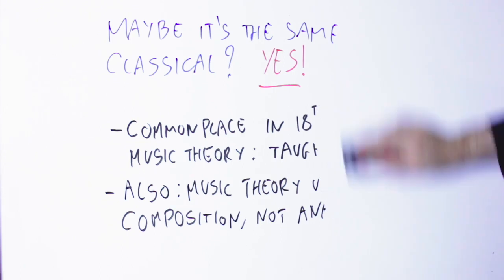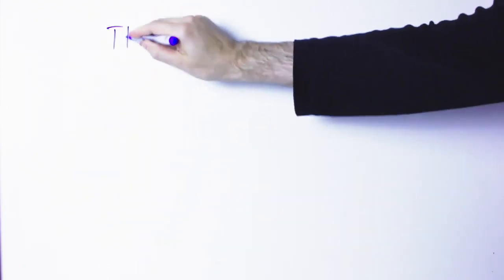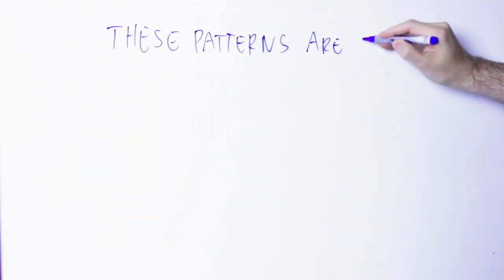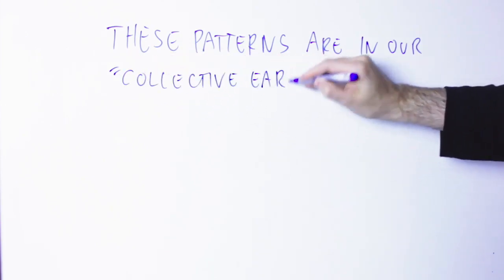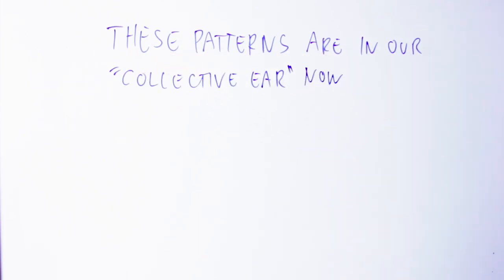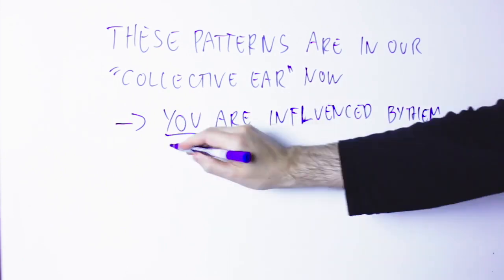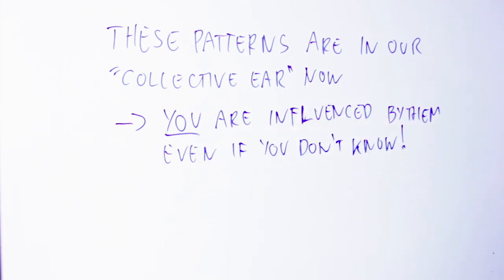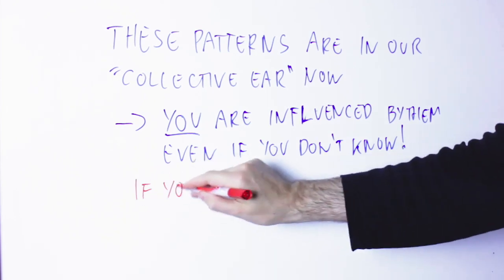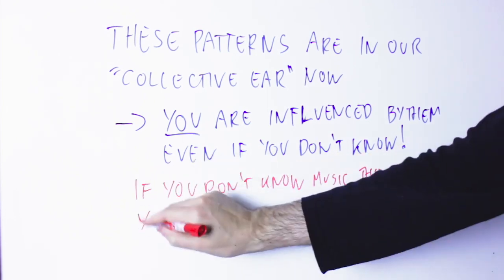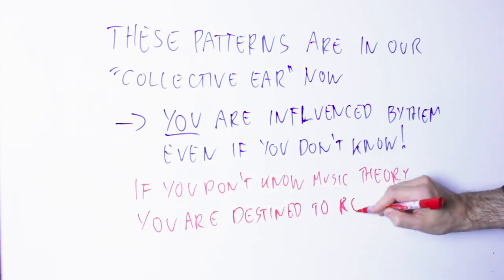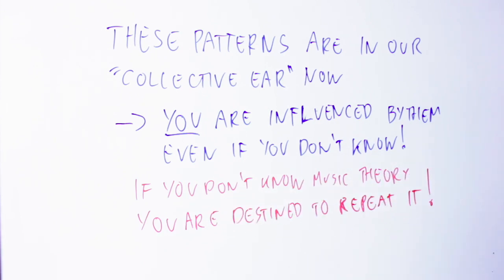Those patterns, since they are omnipresent in all the classical music era, were played so much that they stayed in our ear. So today, when you want to write some music, you can't really ignore them. Those patterns are already in your ear, and unless you know they are there, you are going to use them. In this sense, music theory is like history — if you don't know it, you are destined to repeat it.